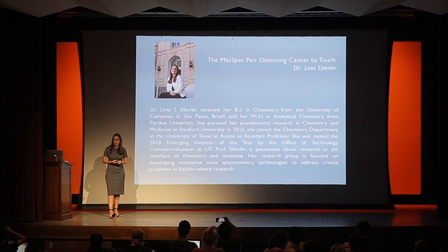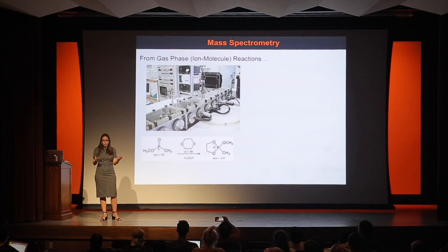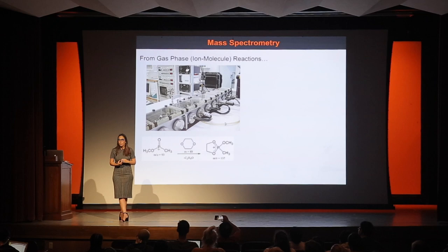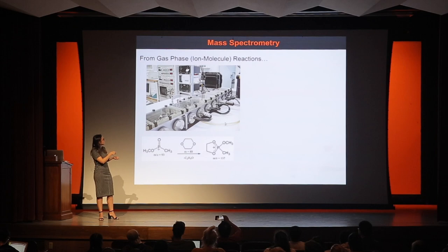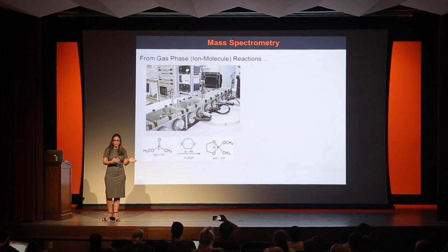I'll start by telling you a little bit about my journey and how I got here doing this kind of different research at the intersect between chemistry and medicine. I started doing research almost exactly 15 years ago and 5,000 miles away from here — I'm originally from Brazil. At that time, as a freshman in college, I was starting to use mass spectrometry in my research. This was the first instrument that I used. You can see this panel here — this is what we call a Penta Quadrupole, a very sophisticated mass spectrometry instrument.